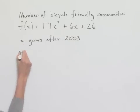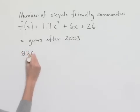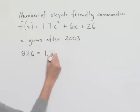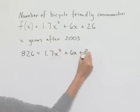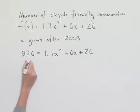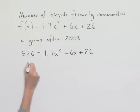So we'll have 826 equals 1.7 times x squared plus 6x plus 26. Now we can subtract 826 from both sides of the equation to give us a quadratic equation set equal to 0.